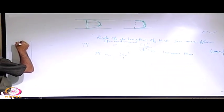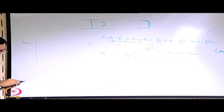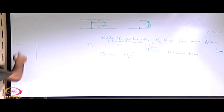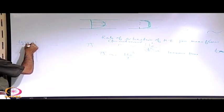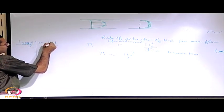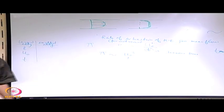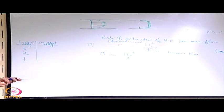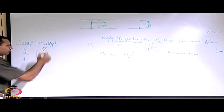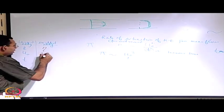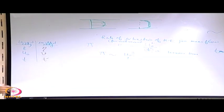Let us define the scales for the largest and smallest eddies. For the largest eddy: length scale L, velocity scale u₀, and time scale T. For the smallest eddy: length scale eta, velocity scale V, and time scale T′. Our objective is to compare these scales to see what is the total range of scales over which turbulent activity is going on.